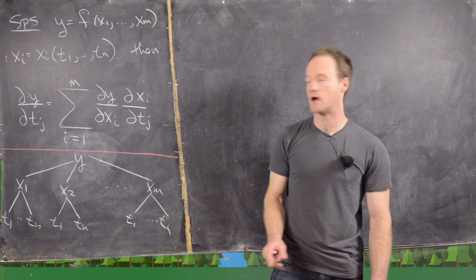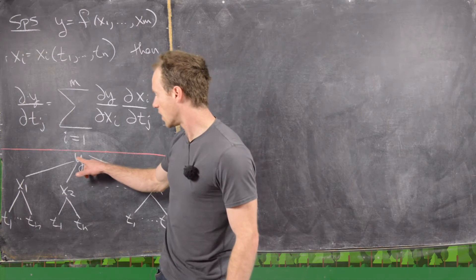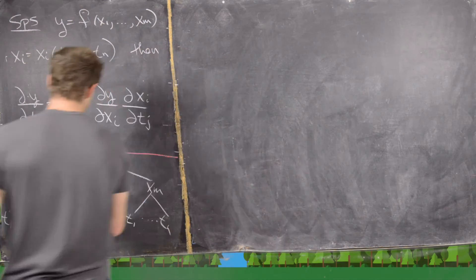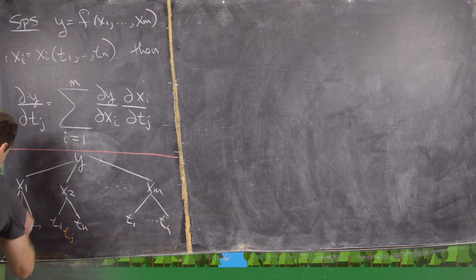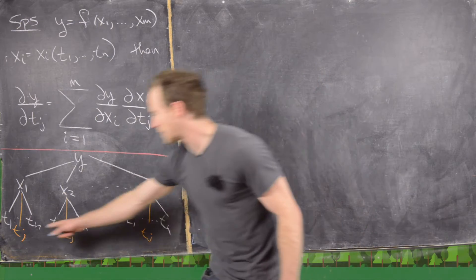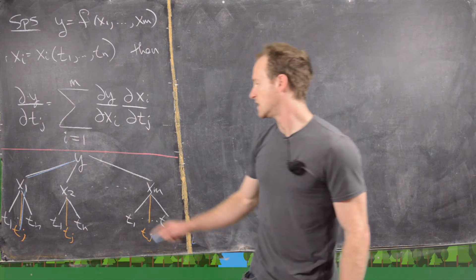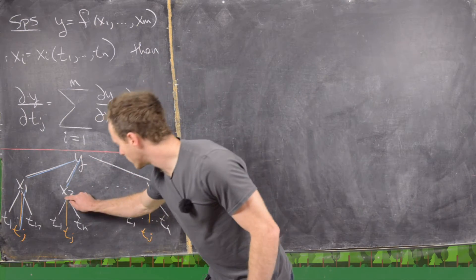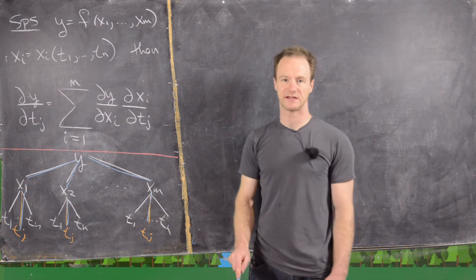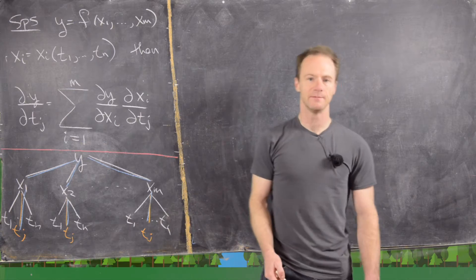Often we look at something called the tree diagram for these types of multivariable chain rule partial derivatives. The idea is that you want to look for all of the branches from the top variable down to your desired dependent variable. So in this case, if we're trying to get to tj, we look for all paths from y down to tj. We take the derivative of y with respect to x1 times the derivative of x1 with respect to tj, then y with respect to x2 times x2 with respect to tj, and so on up to xm. We add all of those up, and that gives us the partial derivative of y with respect to tj.